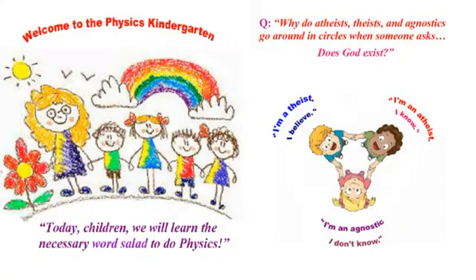This is why atheists, theists, and agnostics go around in circles when asked 'does God exist?' — they never defined the word 'exists,' let alone 'god.' If you don't know what 'exist' means, what are you saying when you say 'God does not exist' or 'God does exist'? Nobody ever defined the word 'exists,' and that's why to this day they all go in circles. Nobody knows what an object is, nobody knows what 'exists' means — and those are the two first words you have to define in physics. That's why we have irrational explanations.